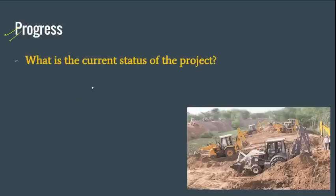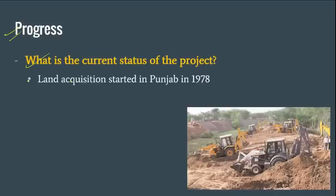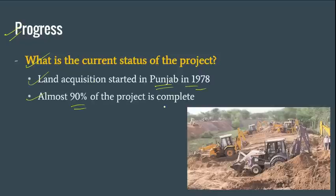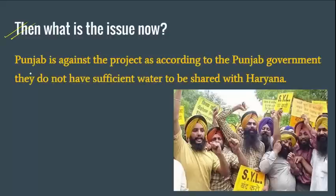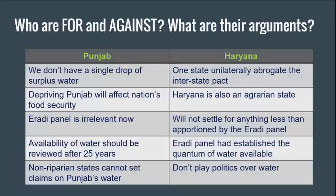What is the progress made till now? Land acquisition started in Punjab in 1978 itself, and almost 90% of the project on the Haryana side is already complete. Punjab has not done a major chunk of the work. Punjab is now protesting against this, telling that they do not have even a single drop of surplus water to share with Haryana. They say they are a water-scarce state and are not going to share anything.